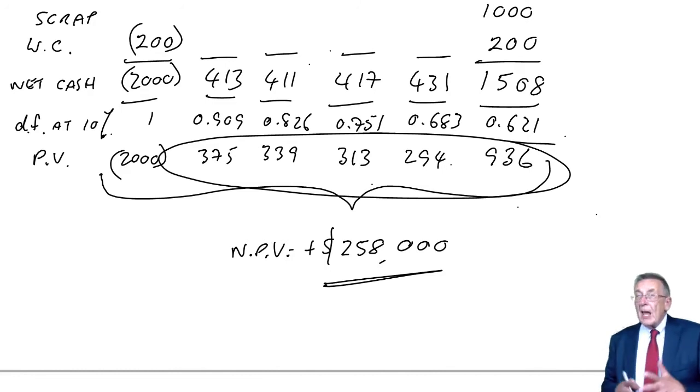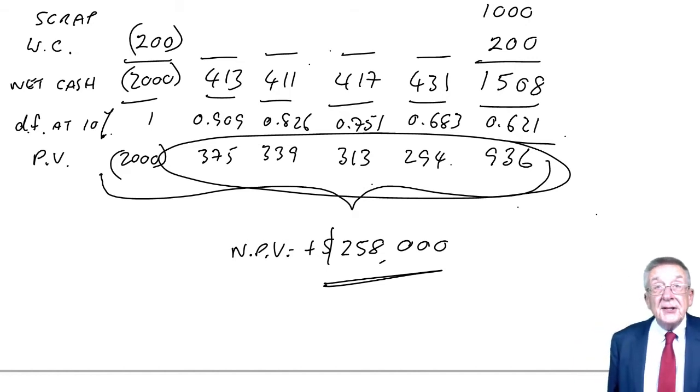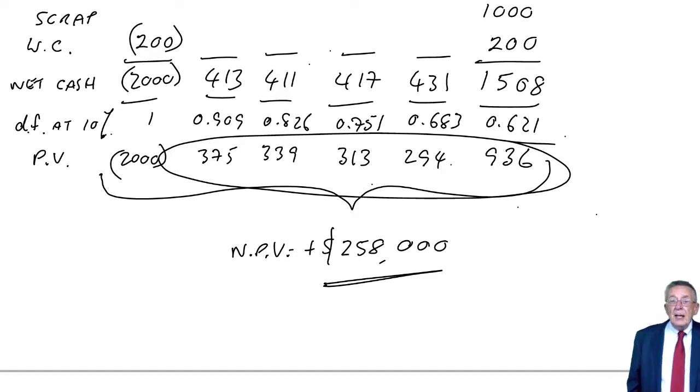I've already checked you on internal rate of return and revised it with you when we looked at cost of redeemable debt, but equally you could be asked to work out the internal rate of return for a project. It's unlikely to be honest in this exam, it's rarely asked, but I need to check it with you because something new that can be asked is what we call the modified internal rate of return.